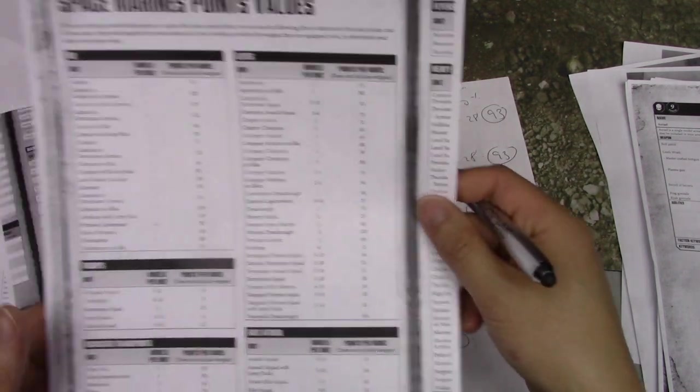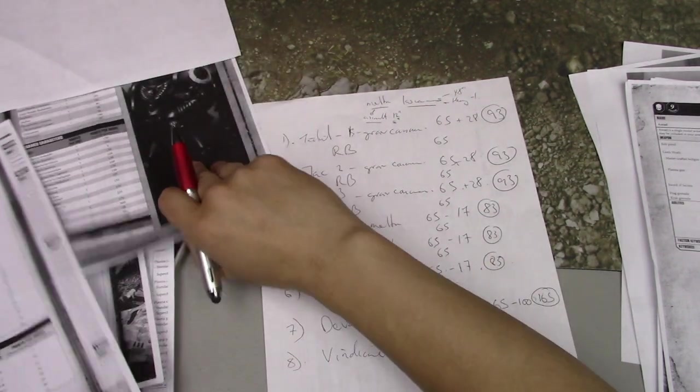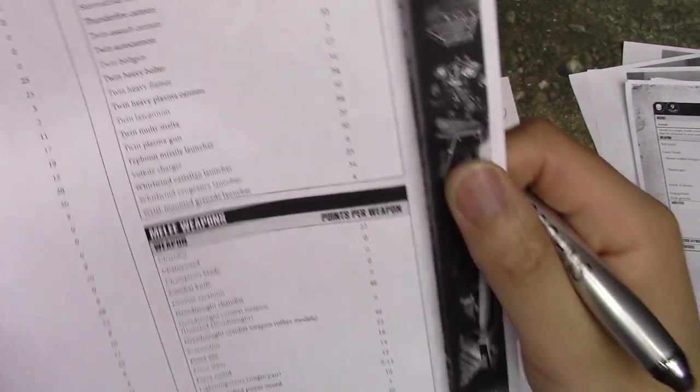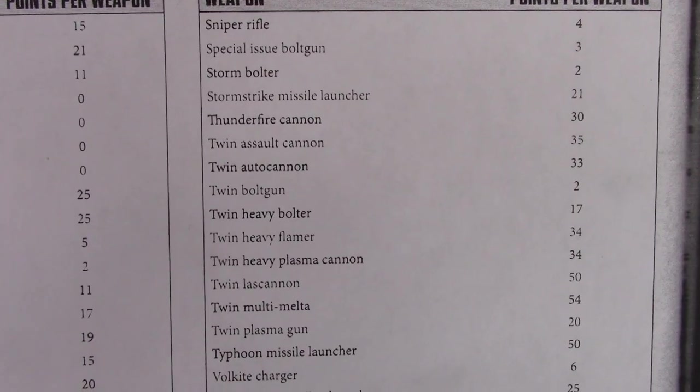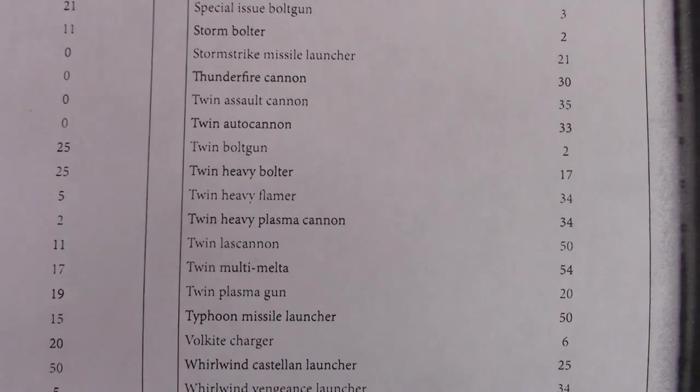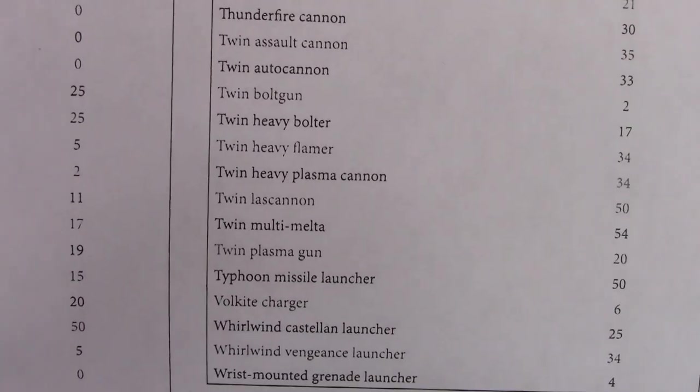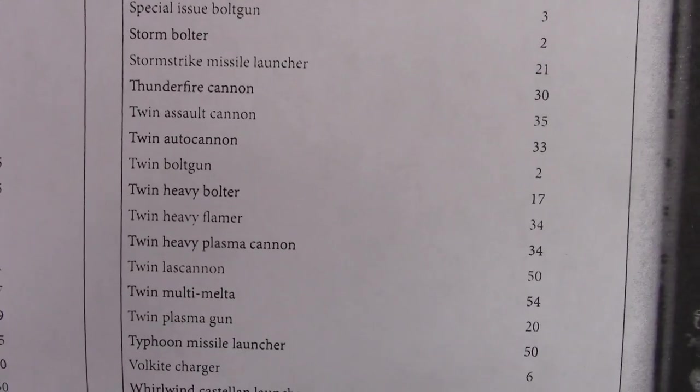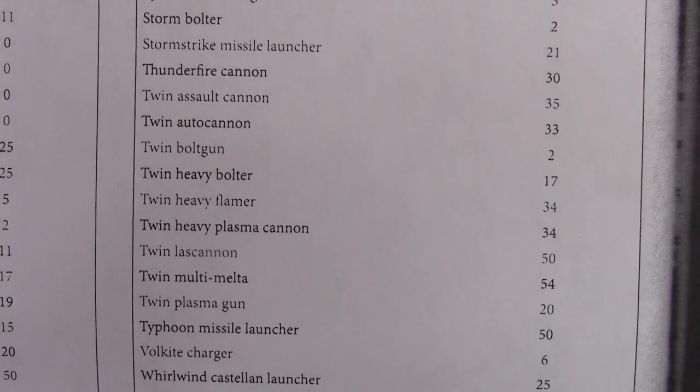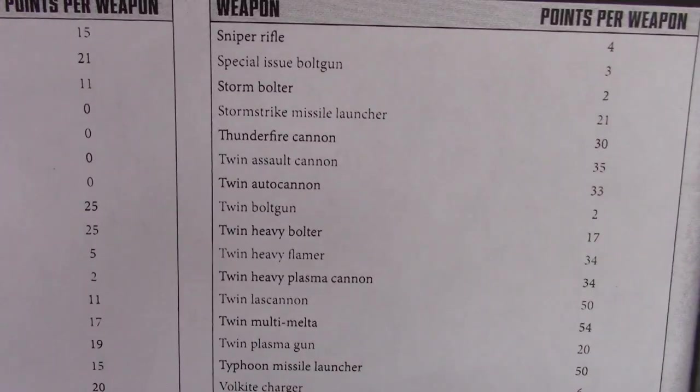I don't feel there's any point bringing rhinos. A rhino is 70 points, and then you add in a storm bolter, which is two points. So a rhino is 72 points and a razorback is 65. If you bring the twin heavy bolter at 17, that ends up being 82. So it's only 10 points more to bring a razorback with a twin heavy bolter, which is way better in terms of killing things. If I'm just stuck with five man squads and there's no firing hatches, there's literally no reason for me to bring rhinos.